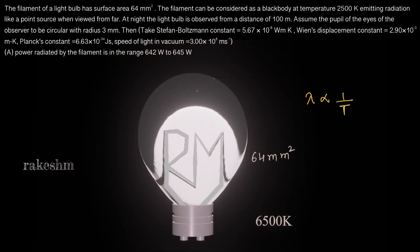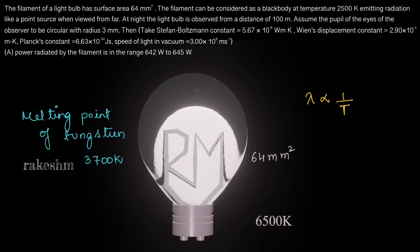While increasing the temperature to 6500 Kelvin, the bulb got switched off. The issue is that the melting point of tungsten is 3700 Kelvin — as I was heating the filament to 6500 Kelvin, the tungsten melted, there was a circuit break, and it switched off. Let me replace this filament with a different material so that we can reach 6500 Kelvin.